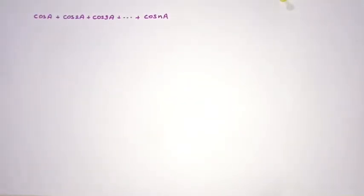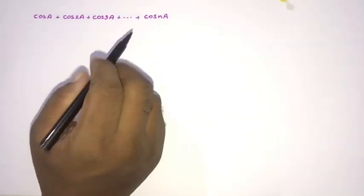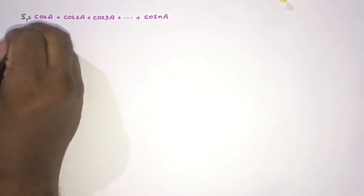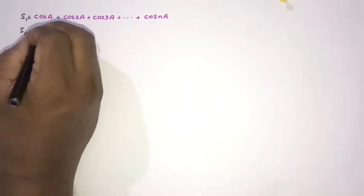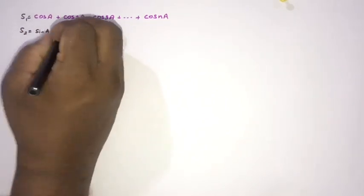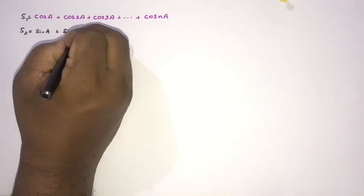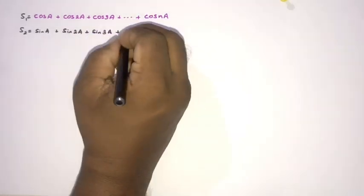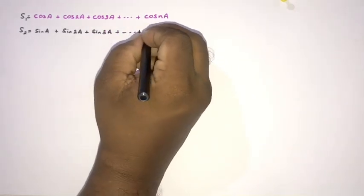Welcome to the Mathematics My channel. In this video we are going to solve this interesting question: find a closed form of the sum. To begin, I am going to take the sum equal to S1, and I am going to define another sum S2 equal to sin(a) + sin(2a) + sin(3a) + ... + sin(na).